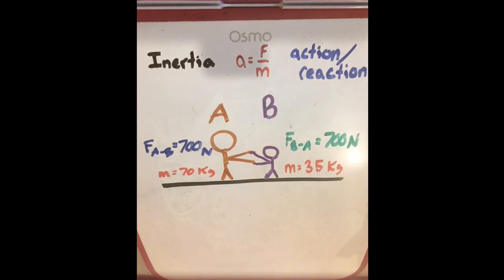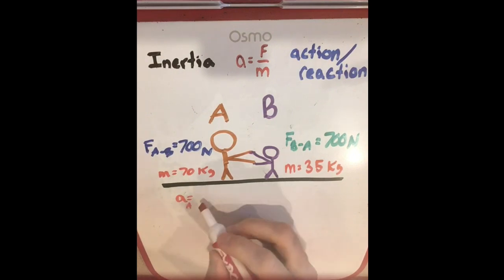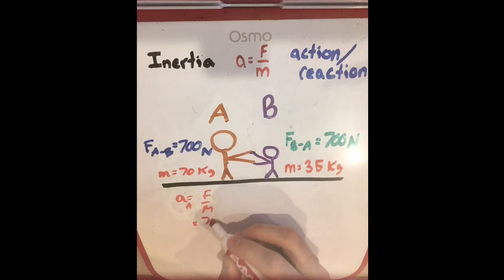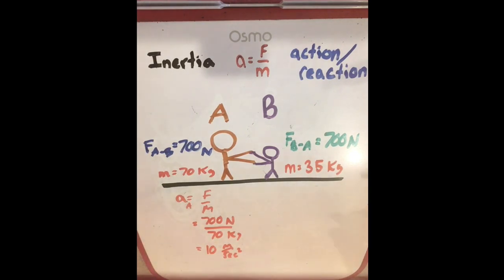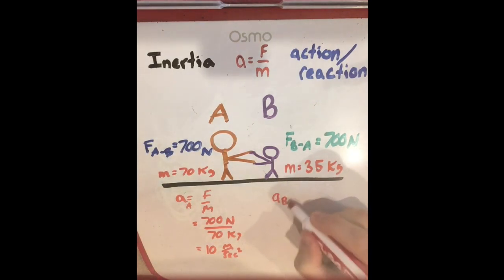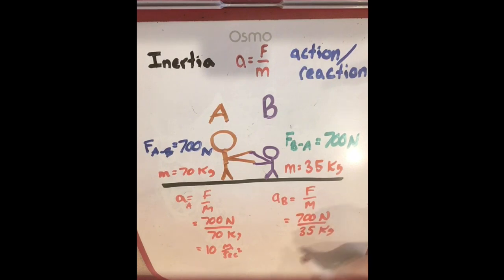The forces are equal in strength but opposite in direction. What you might be confusing is the force being applied on the objects with the accelerations of the objects — and for that we need Newton's Second Law. The acceleration of person A is force over mass: 700 Newtons divided by 70 kilograms, giving an acceleration of 10 meters per second squared. Now for person B, the force is the same — 700 Newtons — but since their mass is only 35 kilograms, their acceleration is 20 meters per second squared.